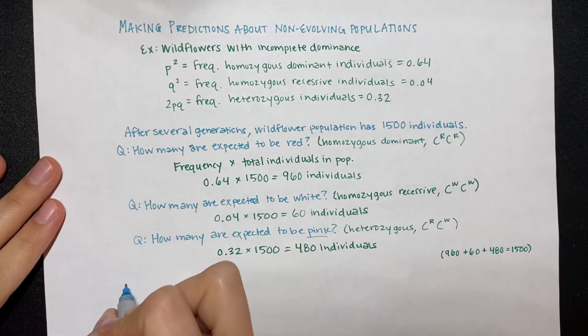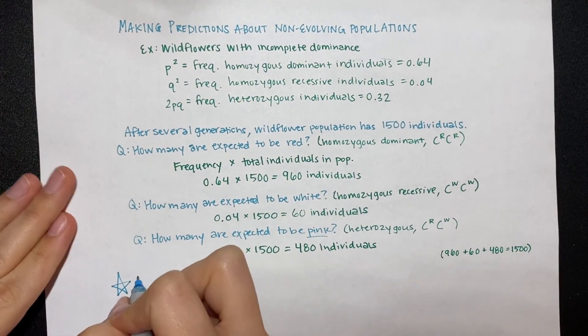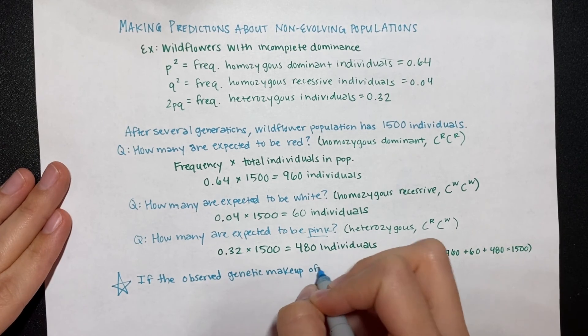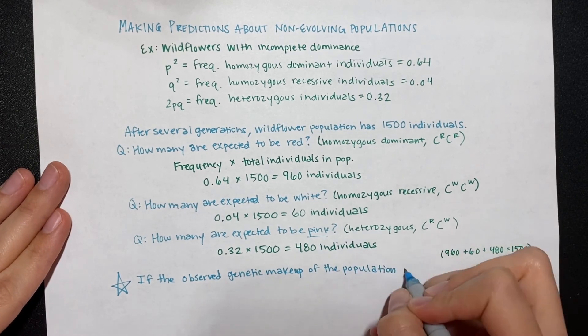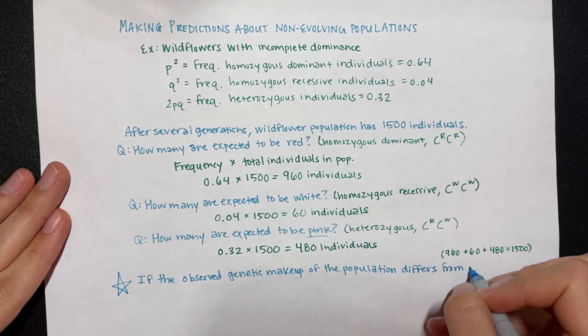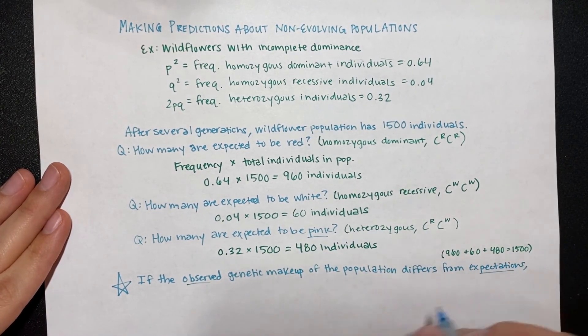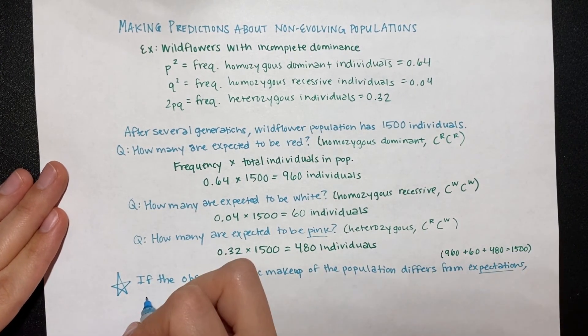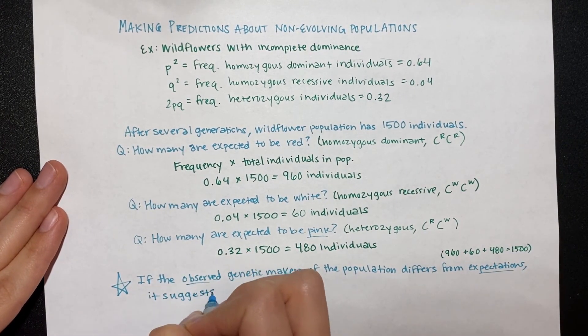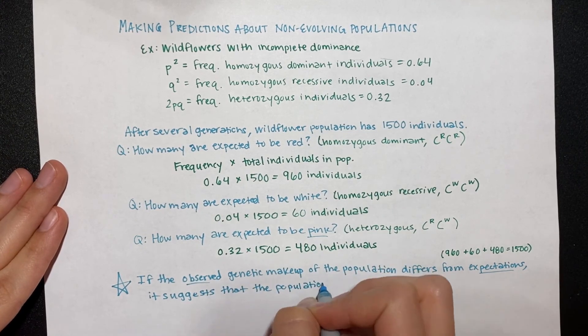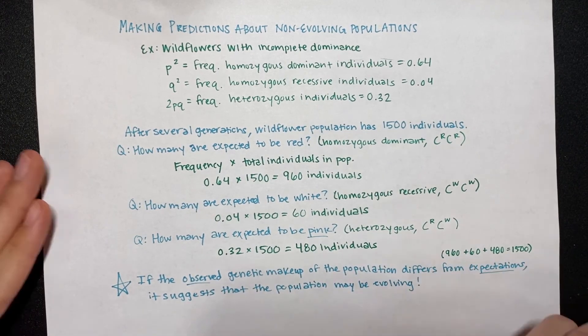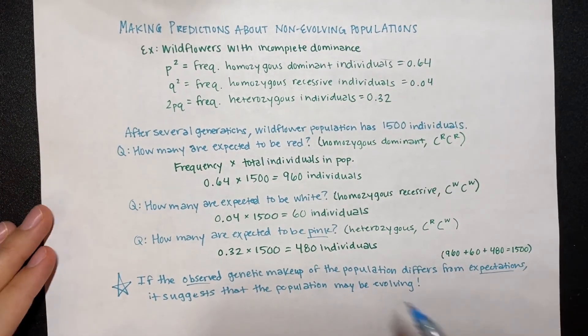If the observed genetic makeup of the population differs from the expectations under Hardy-Weinberg, that suggests that the population may be evolving.